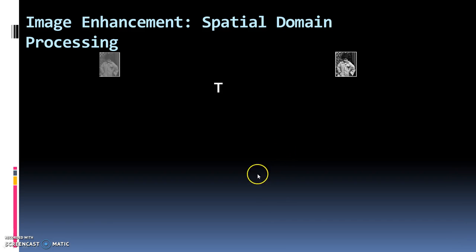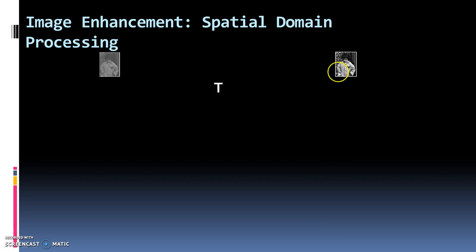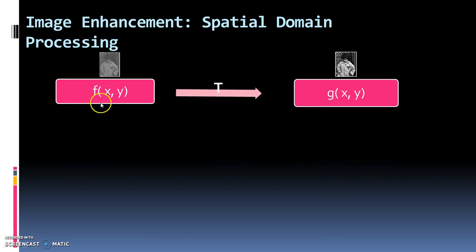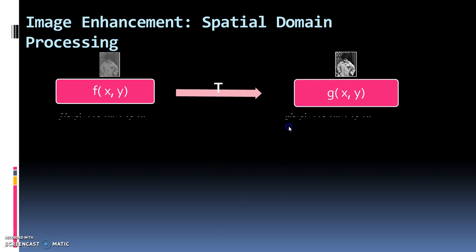Let's see how spatial domain processing helps in image enhancement. Here we have an image on the left — a very low contrast image — versus the image on the right which is very bright. You require a transform T to convert the image from low contrast to a good one. We represent the original image as f(x,y) and the transformed image g(x,y) undergoing a transformation T.